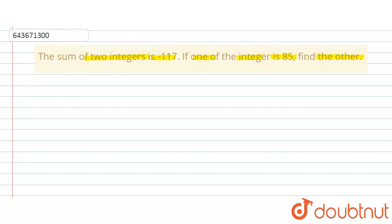Alright, so first of all, before starting this question, let us assume the other integer to be x. Okay, so given the sum of two integers, that means one integer is 85.